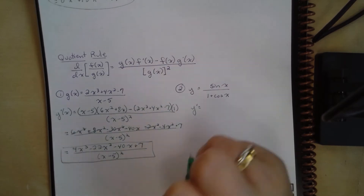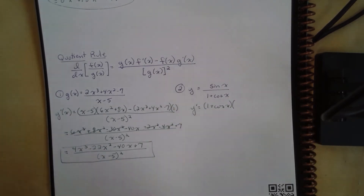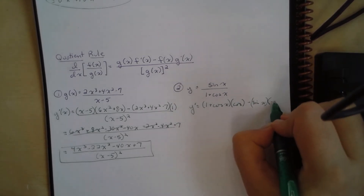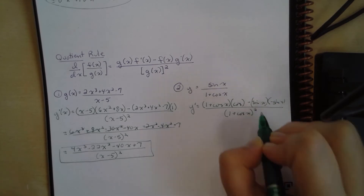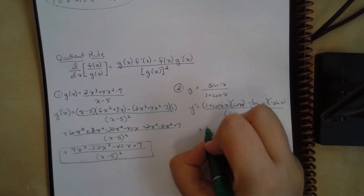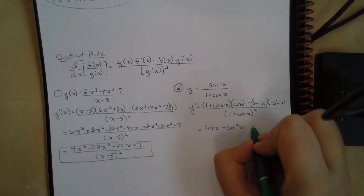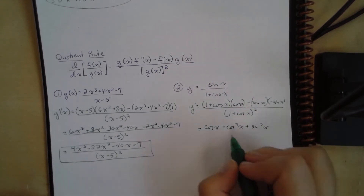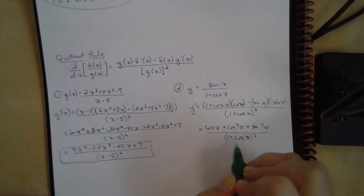So y prime equals the bottom, 1 plus cosine x, times the derivative of the top — the derivative of sine is cosine x — minus the top, sine x, times the derivative of the bottom, which is negative sine x, all over 1 plus cosine x quantity squared. Expanding, we get cosine x plus cosine squared x, and negative times negative gives a positive plus sine squared x.